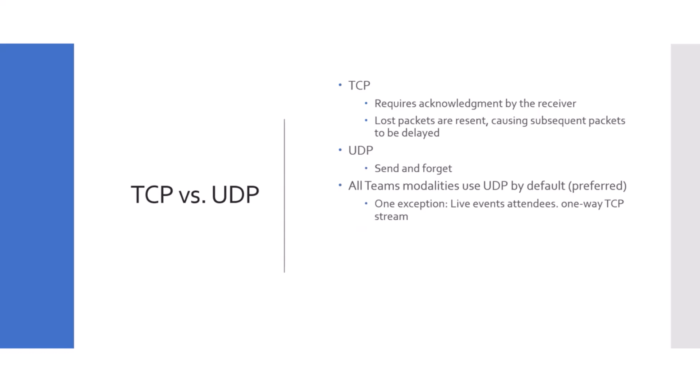Teams uses both. The preferred protocol is UDP because it's quick, fast, and the right protocol for real-time communications, but it falls back to TCP if UDP is blocked by your firewall. All Teams modalities — audio, video, screen sharing, live events — use UDP by default. The only exception is live event attendees: the attendees use TCP by default as a one-way stream. Organizers use UDP for audio, video, and screen sharing.